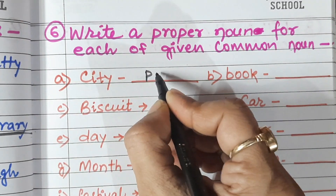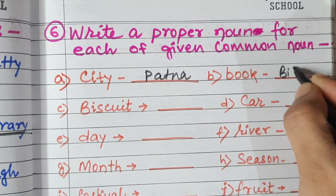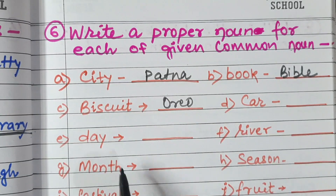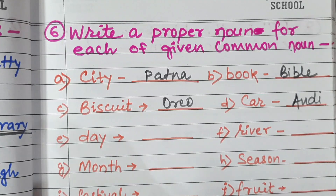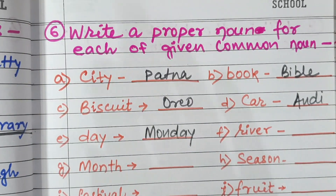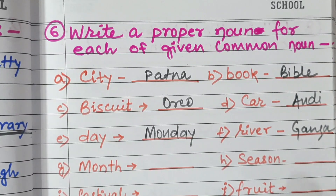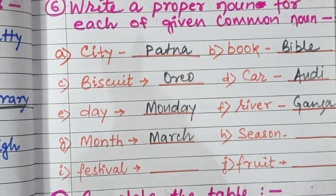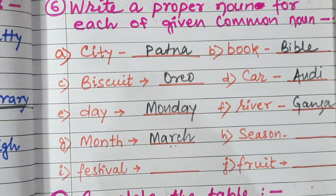For example: city — write any city name. Book — Bible, Ramayana. Biscuit — Oreo, Parle-G. Car — any car brand. Day — Monday, Sunday; any single day is a proper noun. River — a single river name like Ganga or Yamuna. Month — one month name like March is a proper noun. Season — like Summer is a proper noun. Festival — any festival name like Diwali, Holi; this is a proper noun. Fruit — write any fruit: apple, mango, banana.